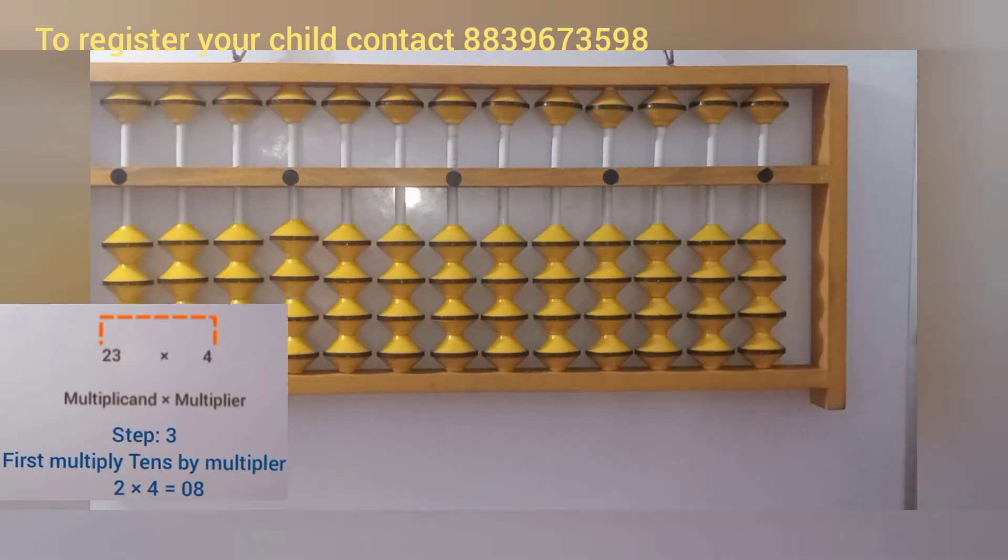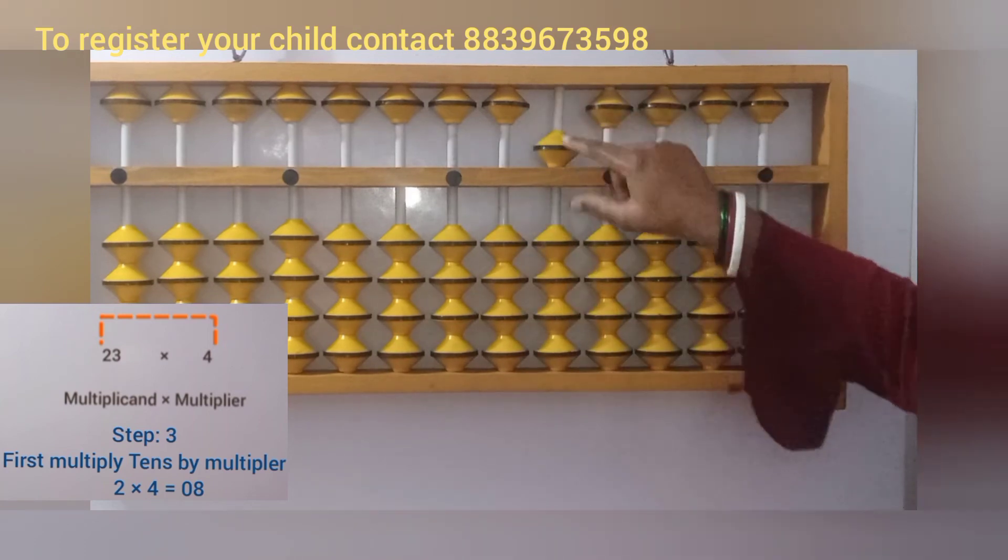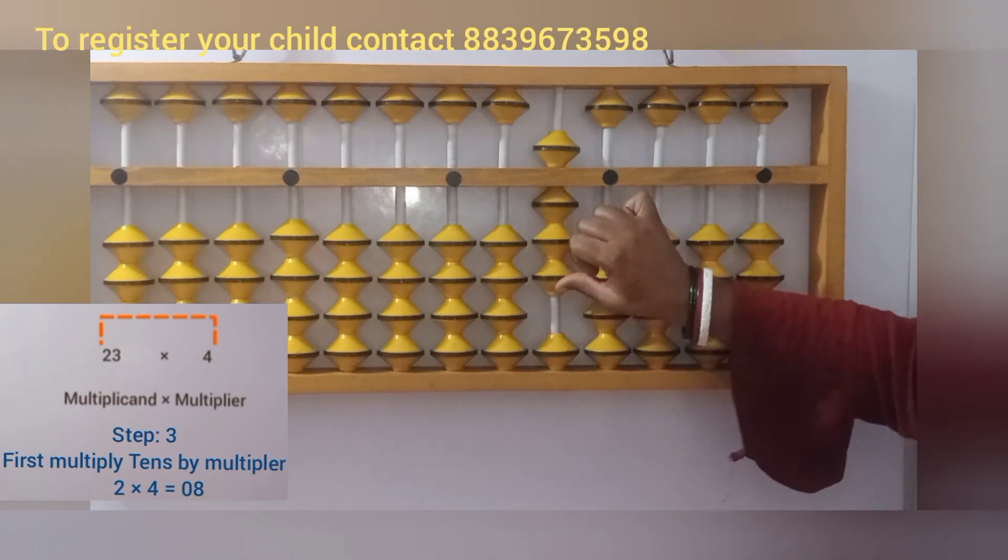Next step is to multiply 10 by the multiplier. That is 2 × 4, so we get the answer 8. We can't take a single digit, so we have to put 0 in front of 8. We get the answer 08. So 0 will be in the 100 place and 8 will be in the 10th place.